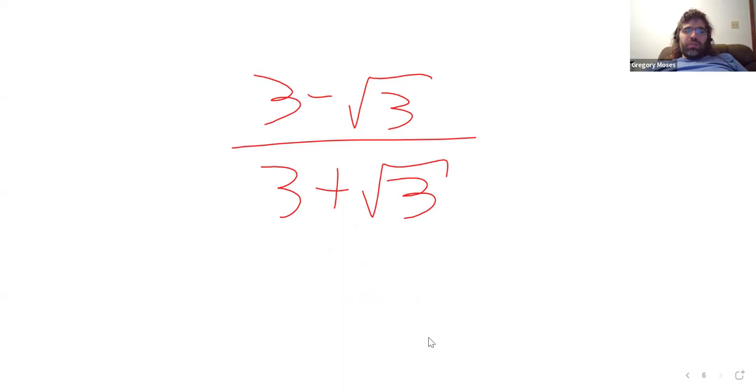So, sine, cosine, tangent. There isn't really the equivalent of this for the secant, cosecant, cotangent. By which I mean, if you have, like, the secant of x plus y.